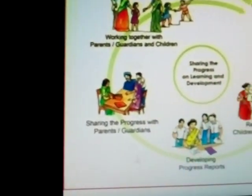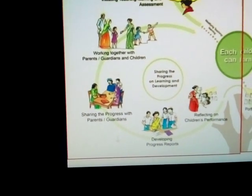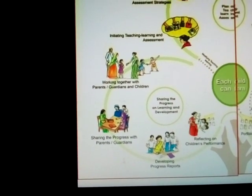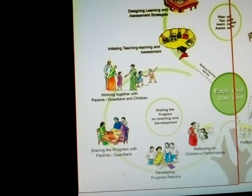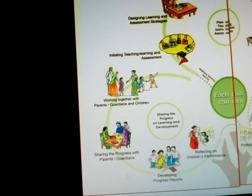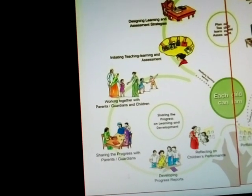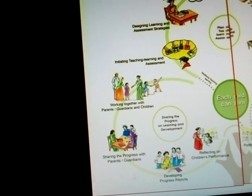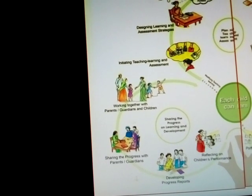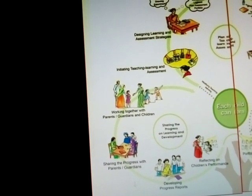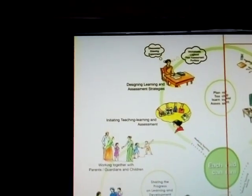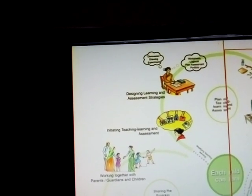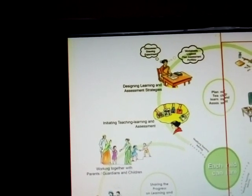The cycle of learning and assessment: first one — scoring. The process of learning progressive development, developing progressive reports, referring to children's performance, and sharing progress with parents and guardians. Working with parents, guardians, and children.